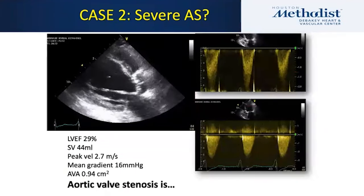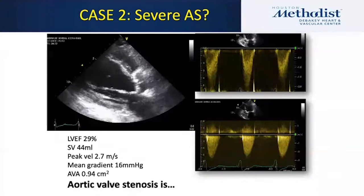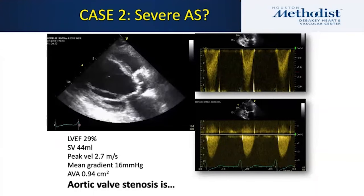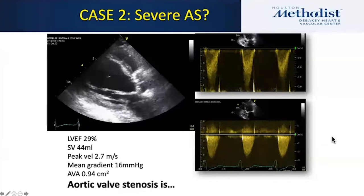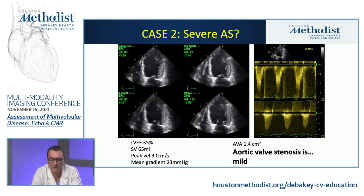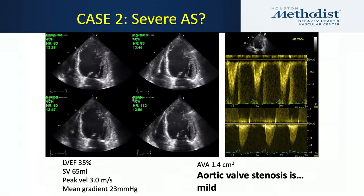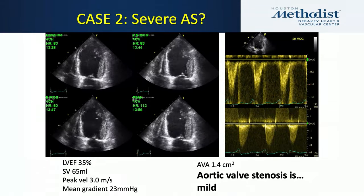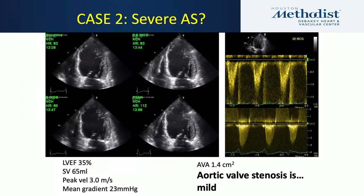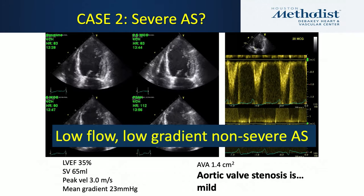A different case with a depressed ventricle: stroke volume is slightly depressed, peak velocity is 2.7, mean gradient is only 16, and calculated valve area is 0.94 — just below the severe threshold. This is the scenario where augmenting forward flow with dobutamine stress echo is useful. With dobutamine, the valve area goes from 0.94 to 1.4 and the gradient rises. This reveals low-flow, low-gradient, non-severe AS — the valve opens more when asked to do so with more flow.